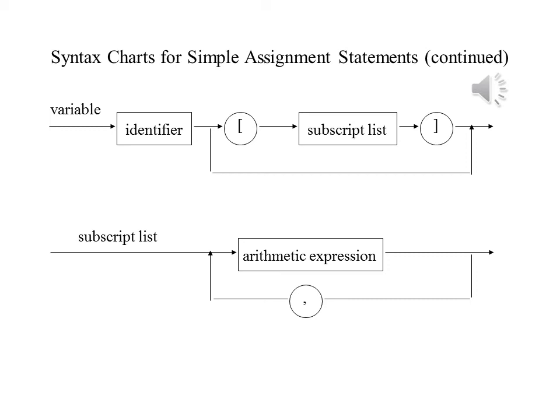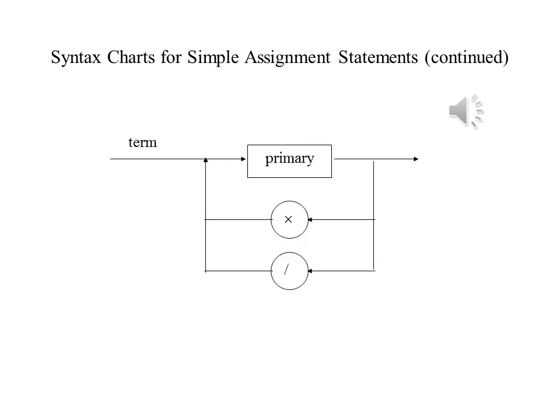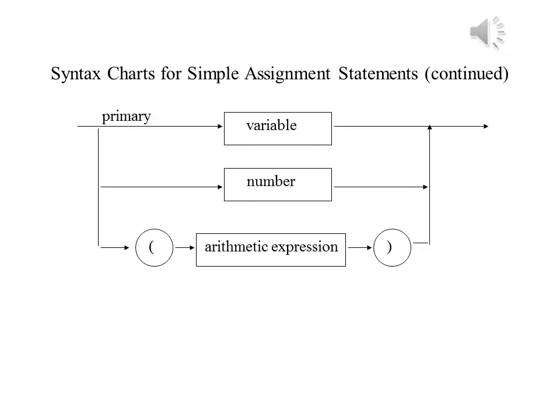And the subscript list can have as many arithmetic expressions as we need, since we have no restrictions on the number of indices that a variable can have. This slide shows us that a term will consist of a primary followed by an indefinite number of times or divide signs and another primary. Or, in other words, an indefinite number of primaries separated by times and or divide signs. Our primary will be a variable or a number or an arithmetic expression.